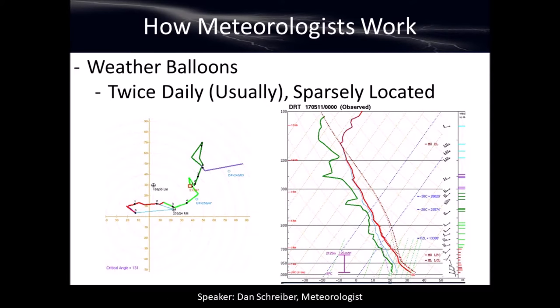Weather balloons are another important piece of information meteorologists use — I took a whole semester in college just on how to decode and encode them. They give us a three-dimensional picture of what the atmosphere looks like at a given point. They're all over the United States and the world. They are usually launched twice daily — once in the morning and once in the afternoon — at approximately 0000 UTC and 1200 UTC. More or less, they give us a three-dimensional picture of what the atmosphere looks like, which is super useful for weather forecasting.